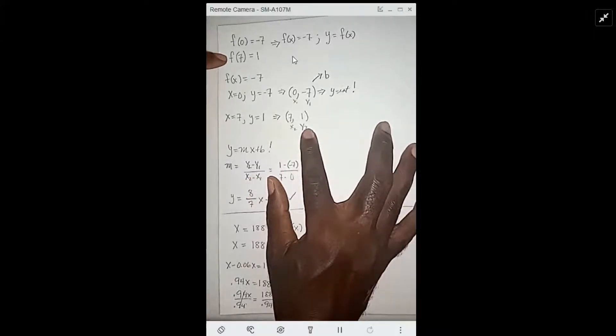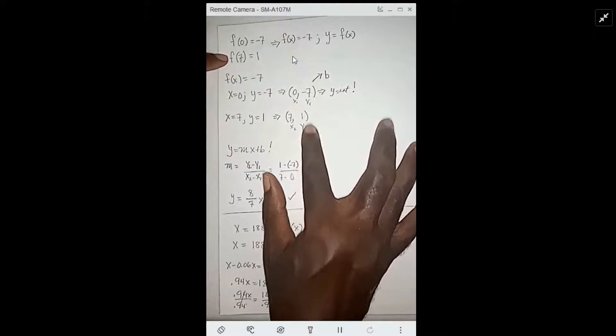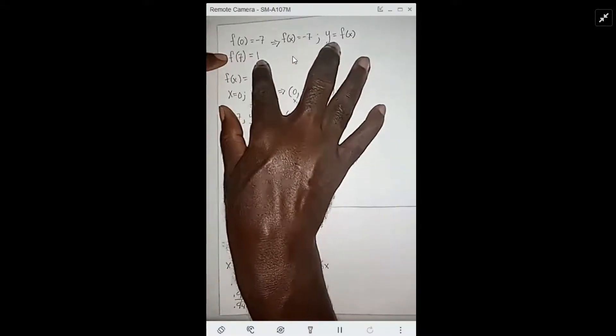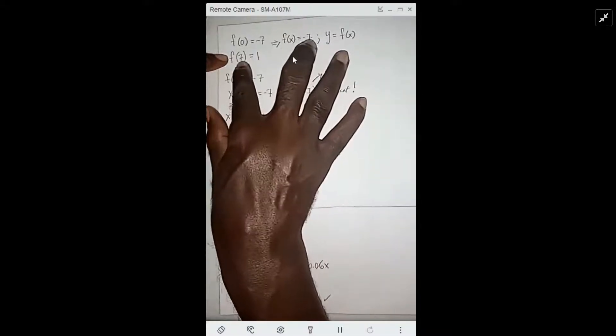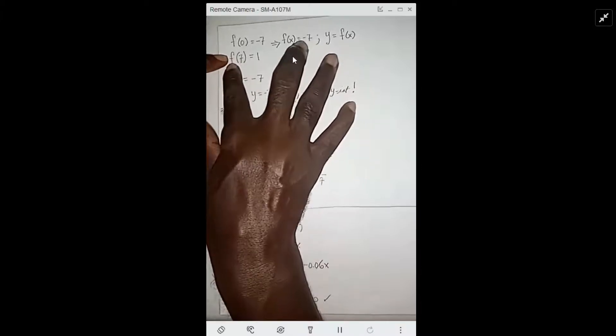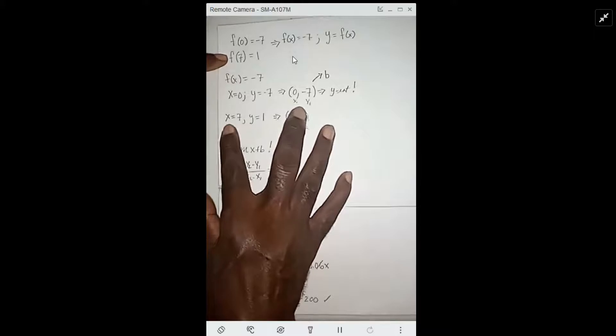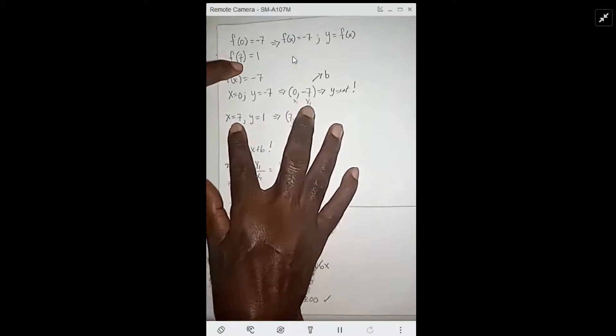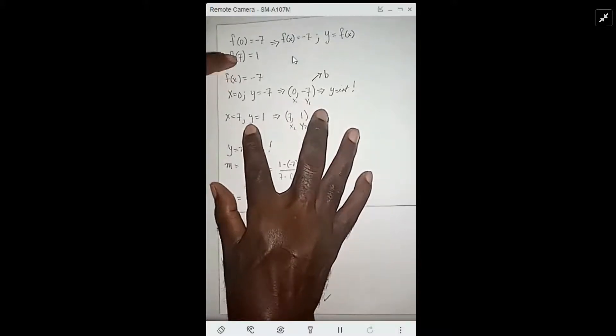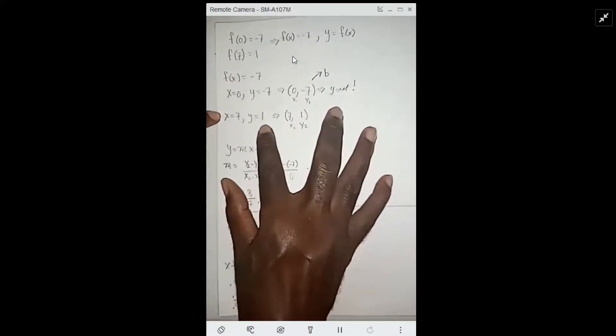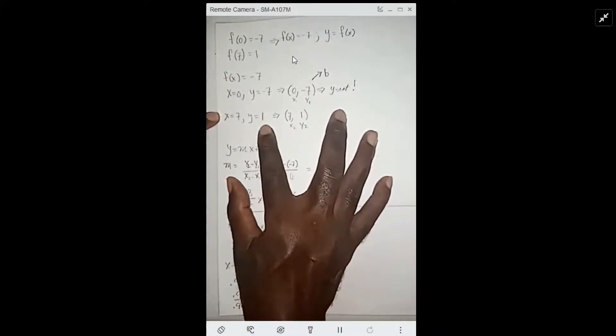Same thing here. f(x) equals y. When x equals 7, we're replacing the x with 7. When x equals 7, y equals 1. That gives us another point (7, 1).